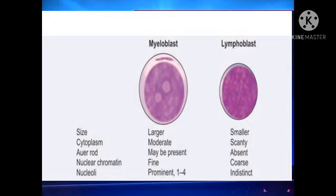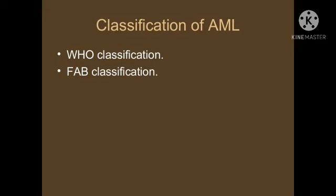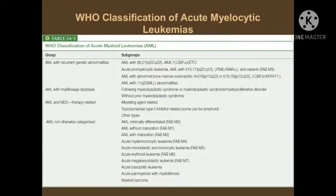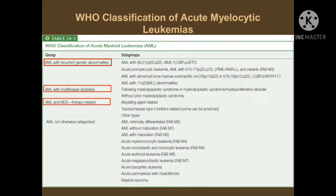Classification of AML is important. There are two classification systems: WHO classification (World Health Organization) and FAB classification (French American British). Under WHO classification of acute myeloid leukemia, remember four groups: AML with recurrent genetic abnormalities, AML with multilineage dysplasia, AML and MDS therapy-related, and AML not otherwise categorized.